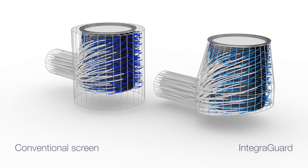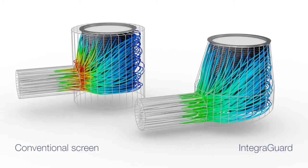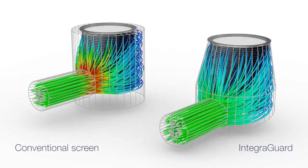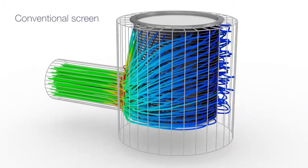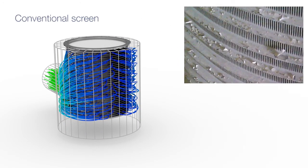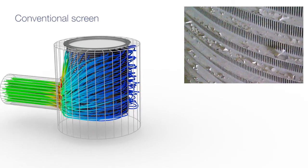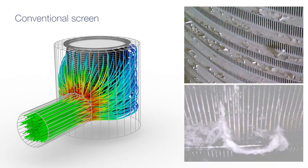In order to clearly identify the benefits of IntegraGuard, we compare the flow velocities of both systems. With the cylindrical design, deposits of fines can occur in areas with lower flow speeds shown here in blue, whereas in areas with high flow speeds shown here in red, spinnings can occur.